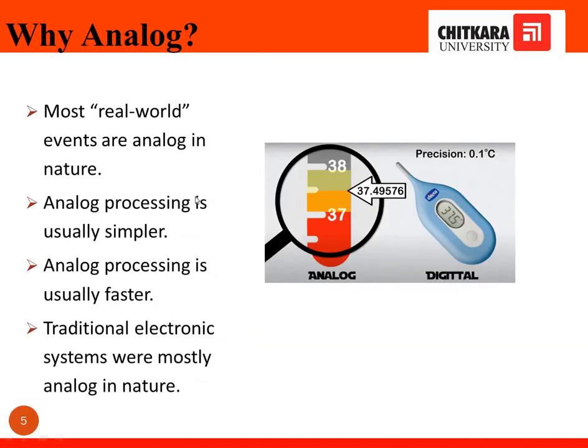Next, why do we prefer analog? Analog signals have high precision, and in real-time applications, everything is analog in nature — we are the ones who convert analog into digital data. In this example, there are two temperature measurement devices, one analog and one digital. In analog, we are taking values up to five or six digits, which means it shows a higher precision rate compared to digital. Digital just rounds off the data and represents it on the display unit.